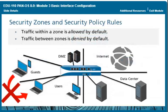Palo Alto Networks firewalls use the concept of security zones to secure and manage your networks. Systems with similar security needs are grouped into zones. For example, you would expect to see traffic initiated from the Internet making connections into a DMZ network, but not into a data center network. To enforce this behavior, the DMZ network can be placed in one zone and the data center network in another. You can configure different security policy rules to control traffic to and from each zone. Zones are a logical grouping based on a particular type of traffic, and a single zone can reside at different locations throughout your enterprise.